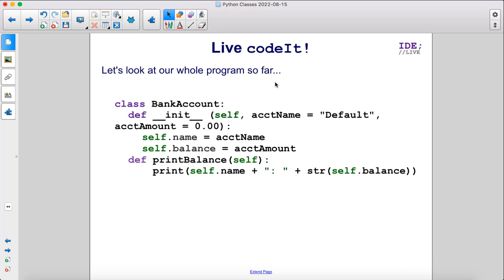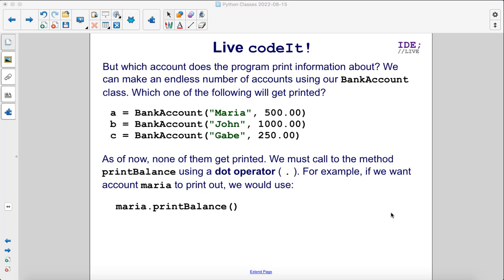Let's look at our whole program so far. We have class BankAccount, we have an __init__ method, and we have a printBalance method. But which account does the program print information about? We can make an endless number of accounts using our BankAccount class. Which one of the following will get printed? As of now, none of them get printed. We must call the method printBalance using a dot operator.